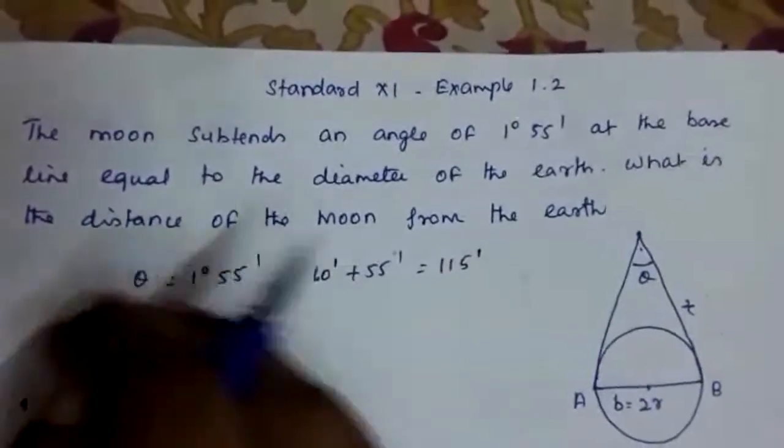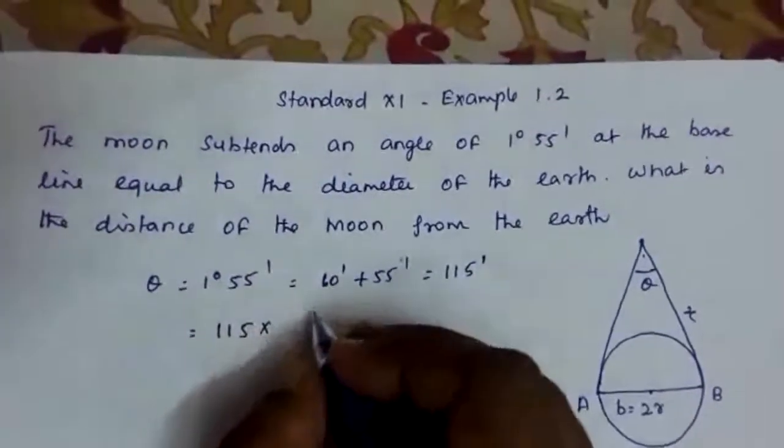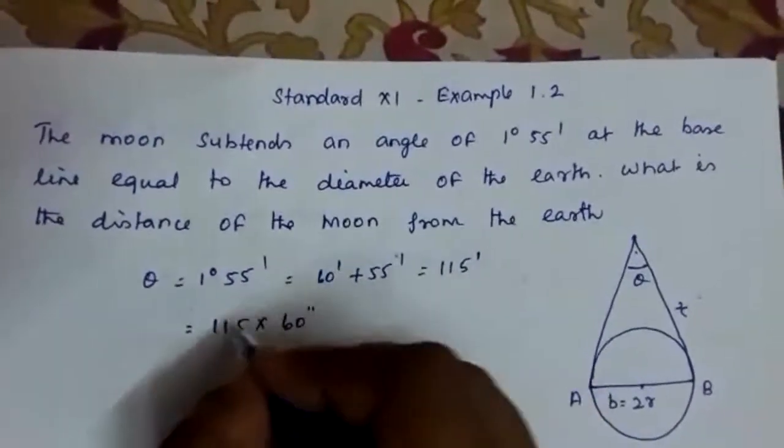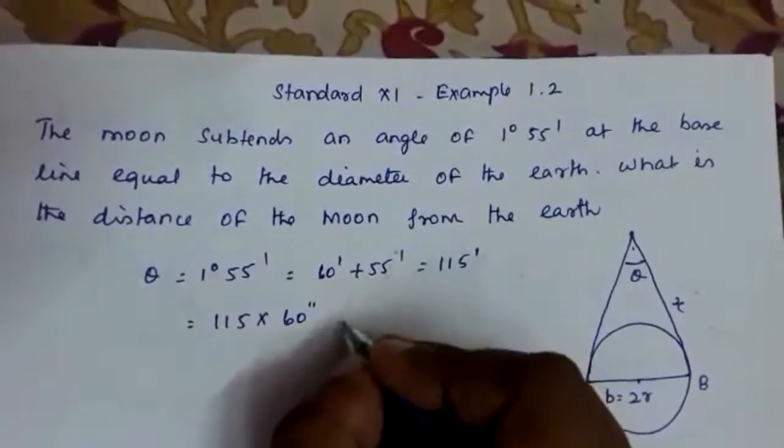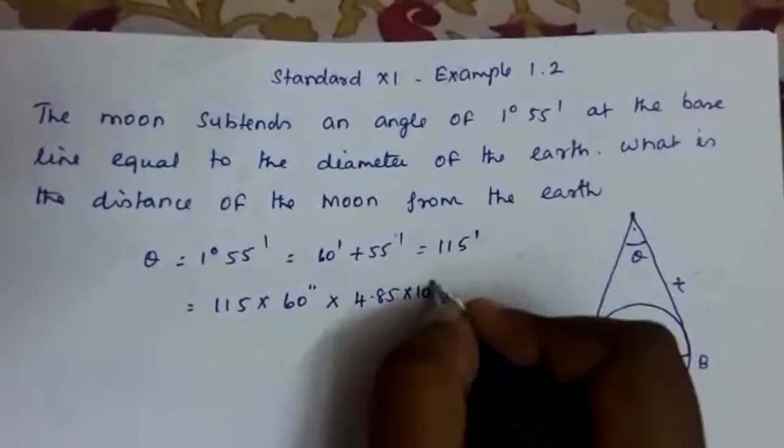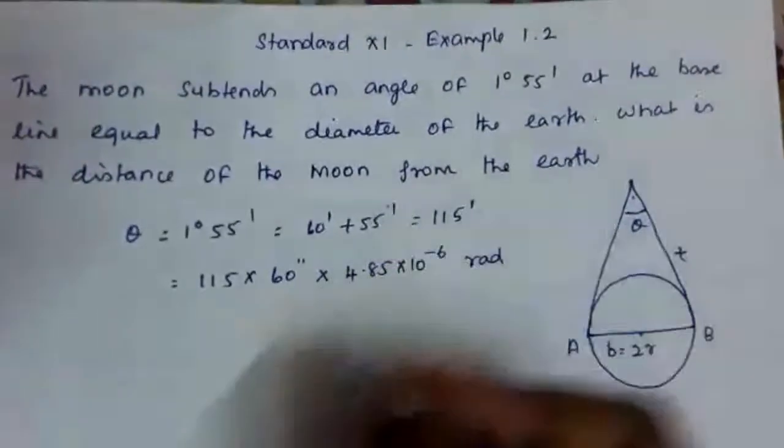Now this can be converted as 115 into 60 seconds, which is multiplied by 4.85 into 10 raised to minus 6 radian. Now we are converting into radian.